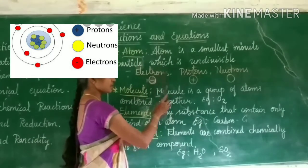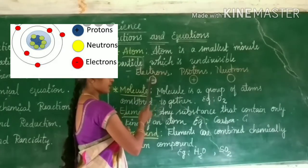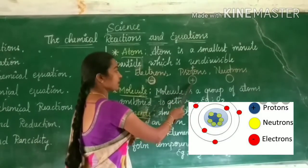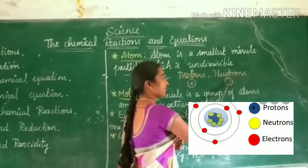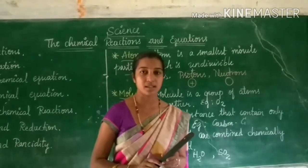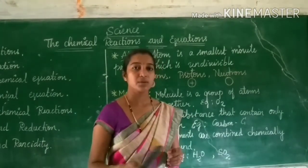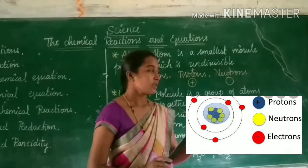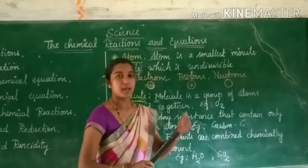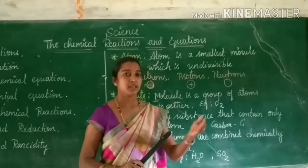But an atom consists of three fundamental subatomic particles: electrons, protons, and neutrons. Electrons are negatively charged particles, protons are positively charged particles, and neutrons are electrically neutral. The electrons revolve around the nucleus of an atom, but protons and neutrons are combined together and present inside the nucleus of an atom.